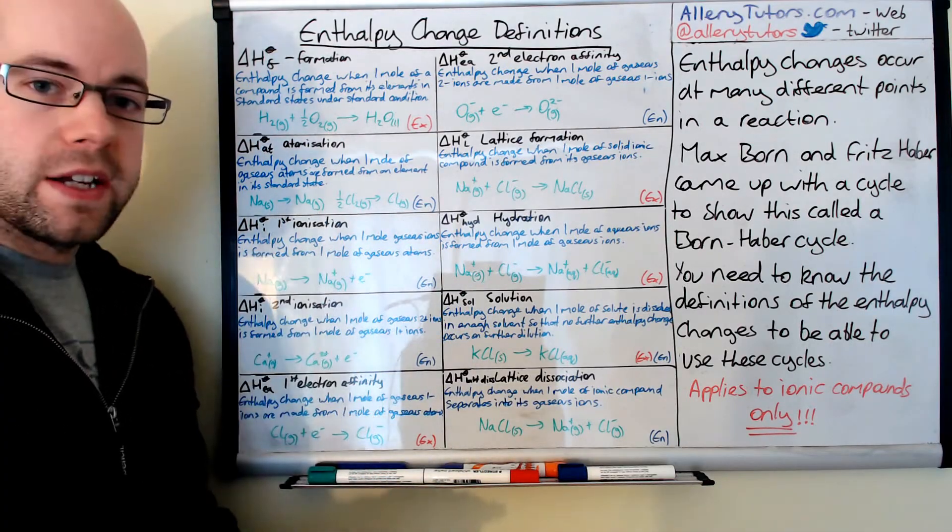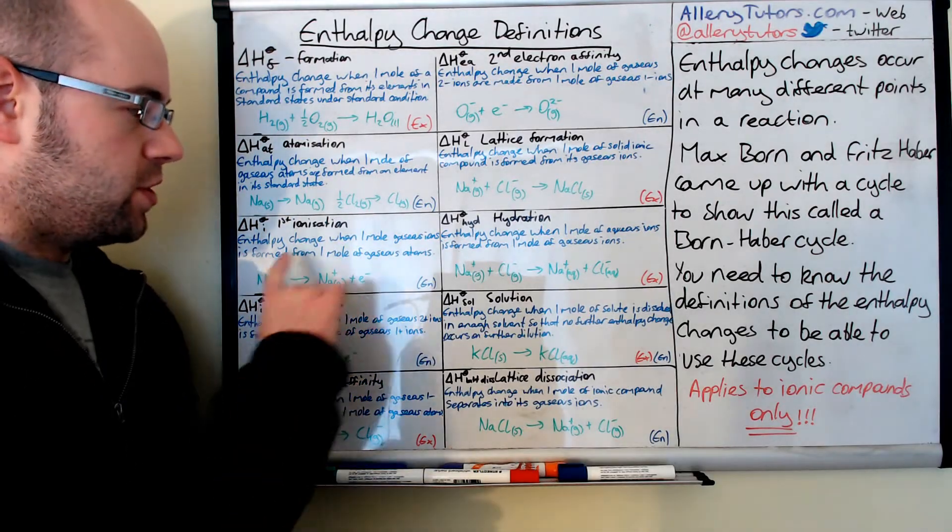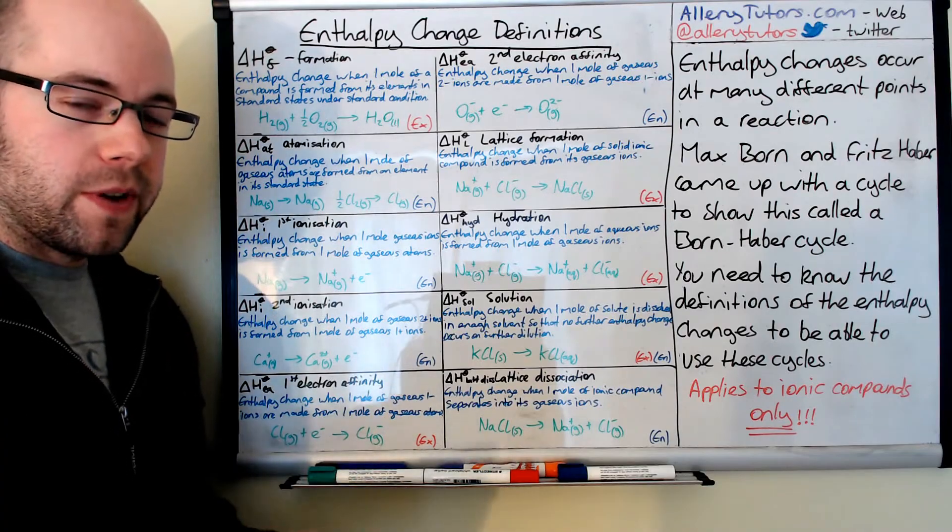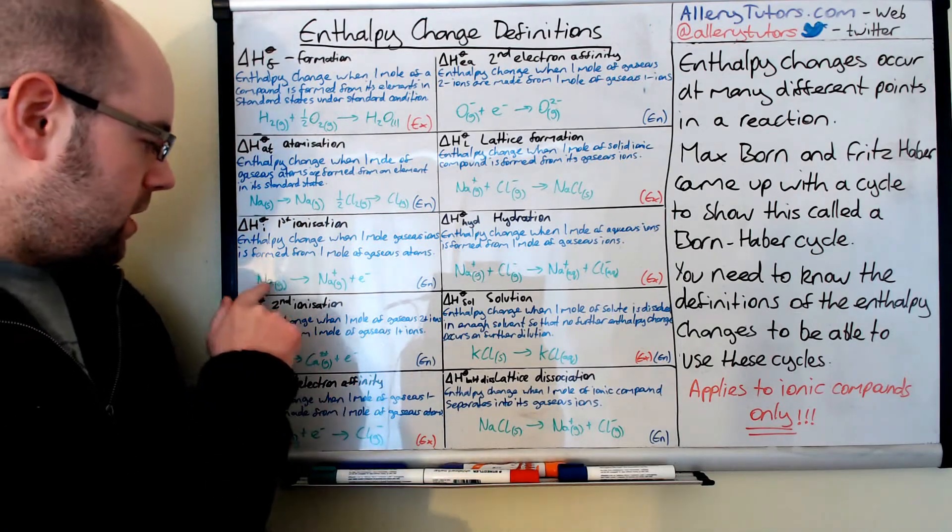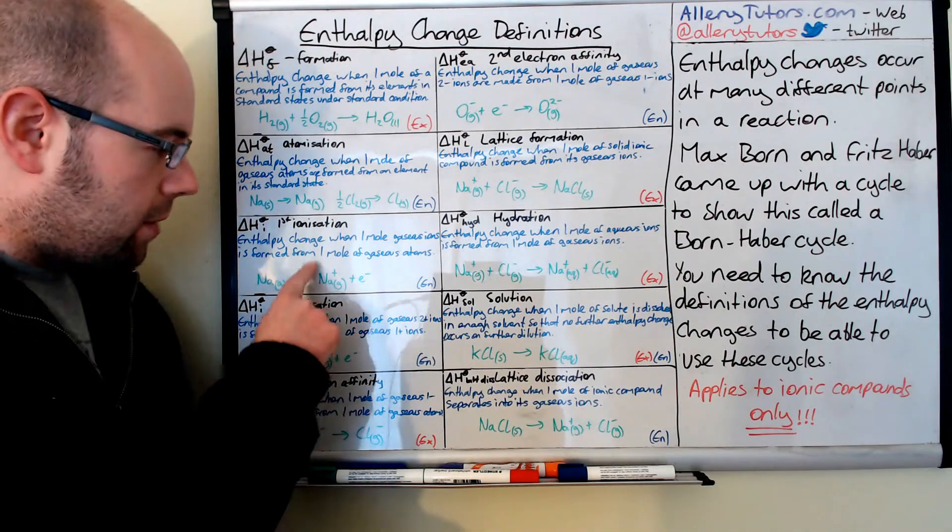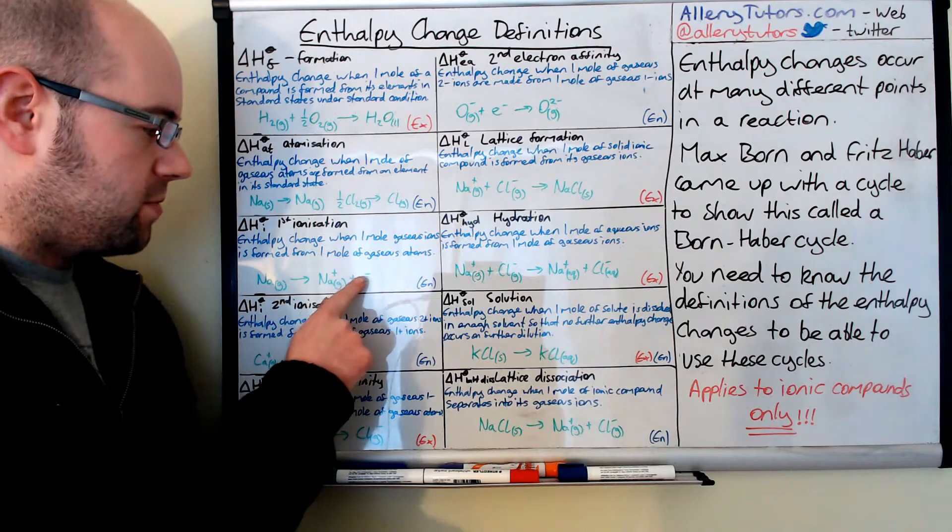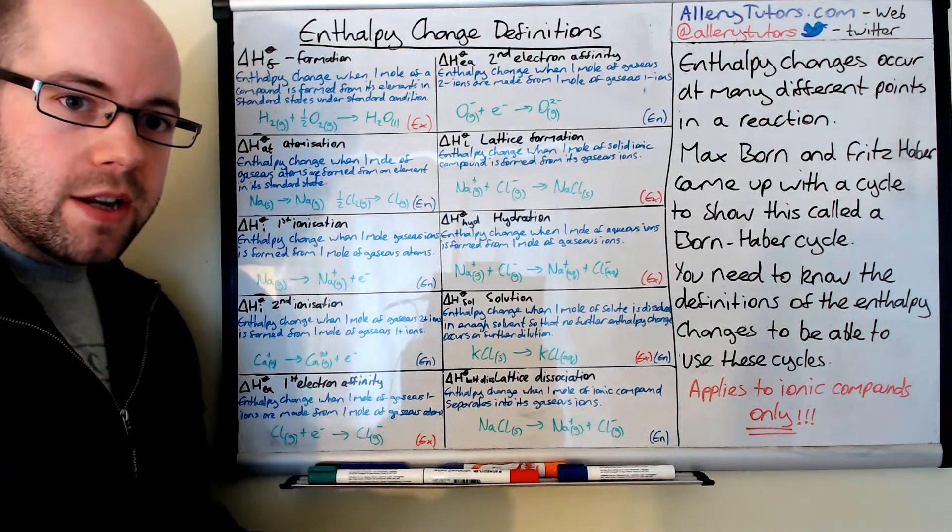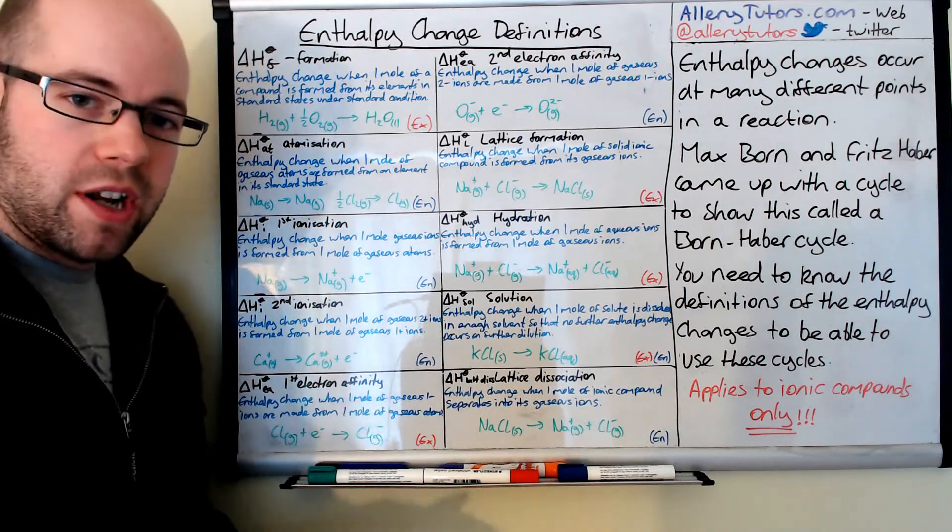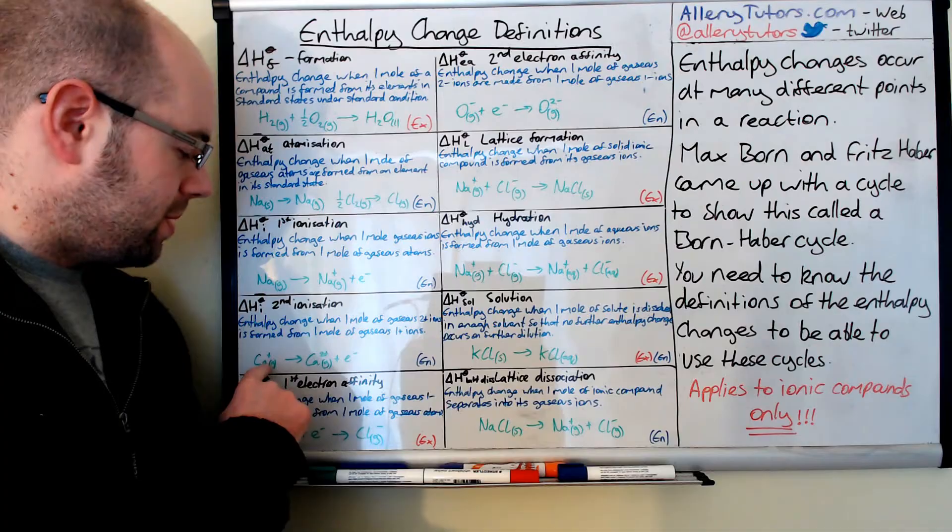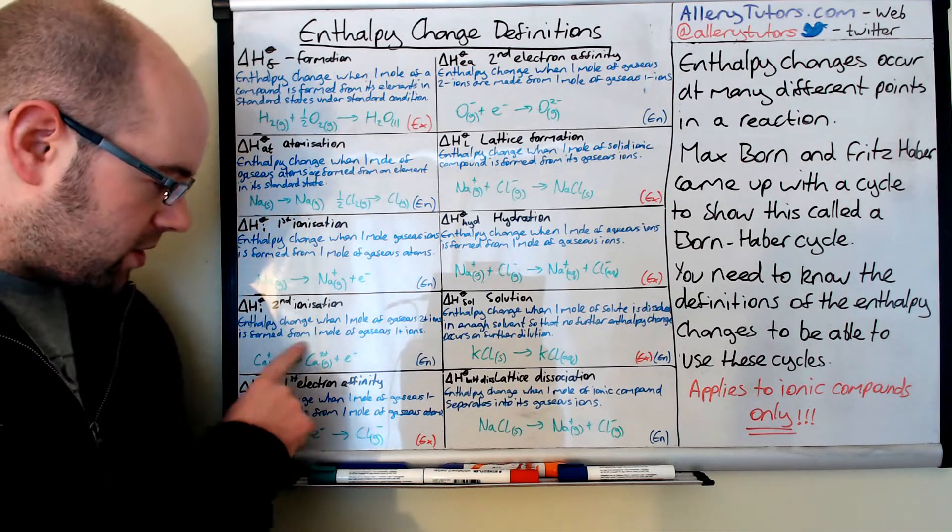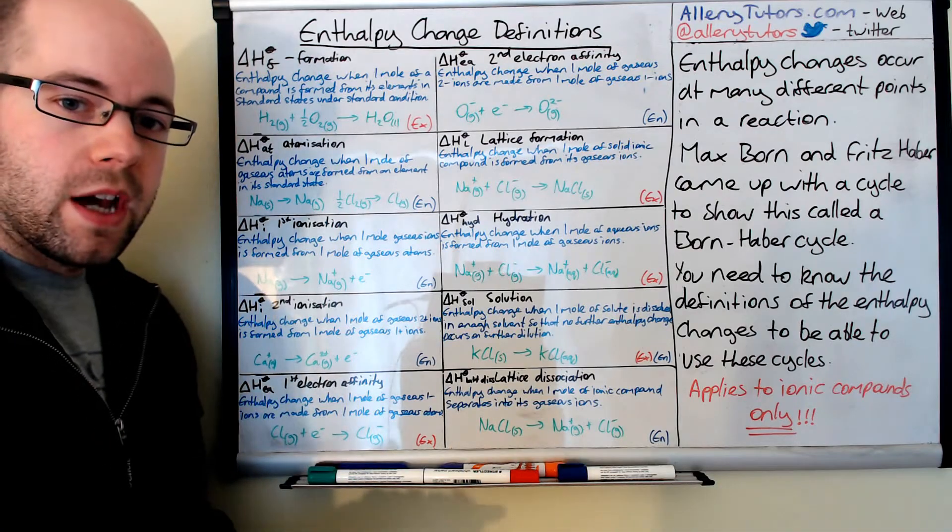Enthalpy of first ionization energy. This is the enthalpy change when one mole of gaseous ions are formed from one mole of gaseous atoms. Effectively we're removing one electron from it. This is sodium in the gaseous state. The state symbol is really important. We're forming sodium ion, which is a gas as well, plus an electron. Because we have to put energy in to remove the electron, this is an endothermic process. The second ionization energy is the same—it's endothermic, except we're removing an electron from something that's already positively charged. We're forming Ca2+ ion plus an electron.